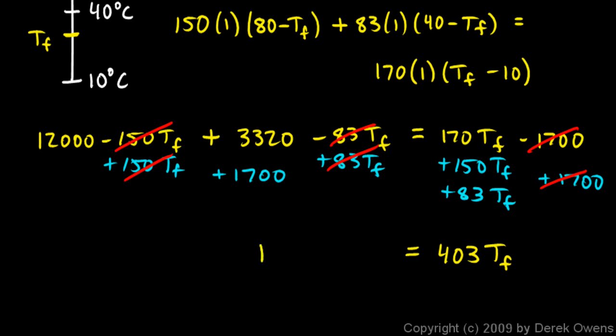And that comes out to 17,020. And then I can divide each side by 403, and I end up with TF is equal to 42.2 degrees Celsius. And that's my answer.